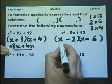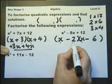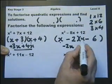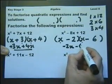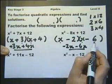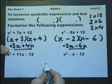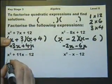But again, let's check it. x times x is x². Minus 2 times x is minus 2x. x times minus 6 is minus 6x. So yes, we've got our minus 8x. And the minus 2 times the minus 6 will give us the plus 12. So everything is working nicely.